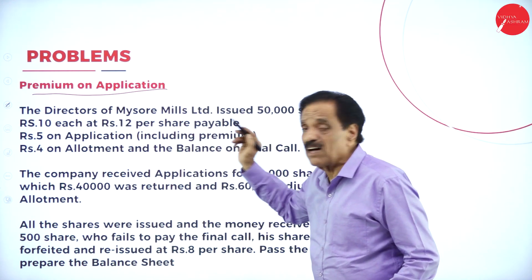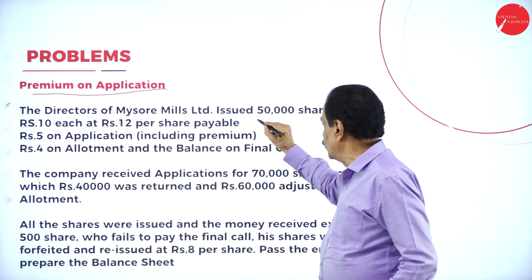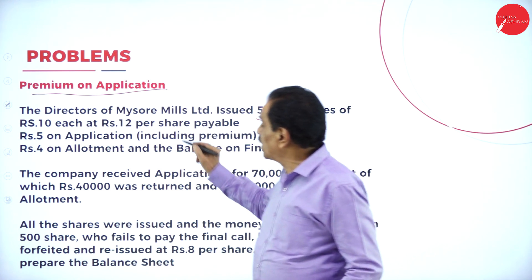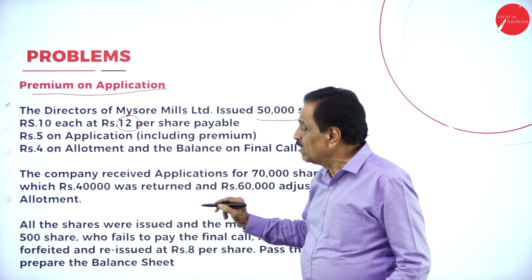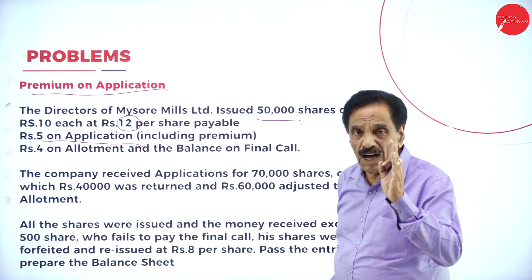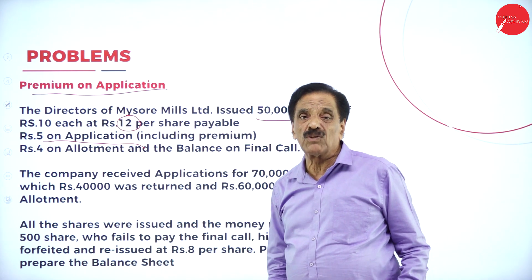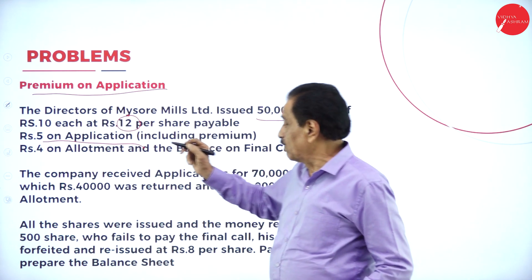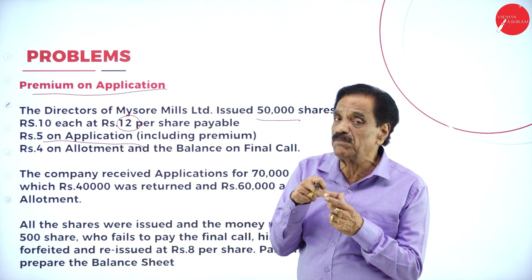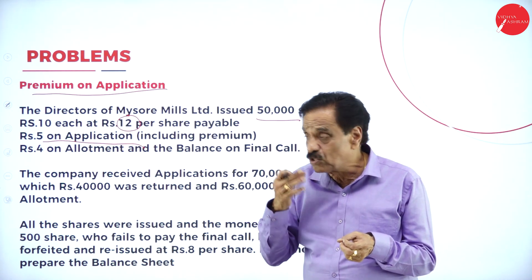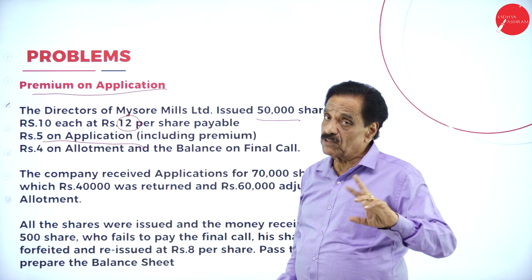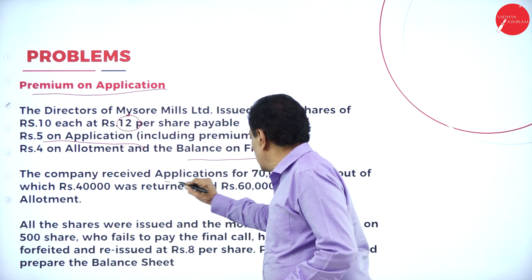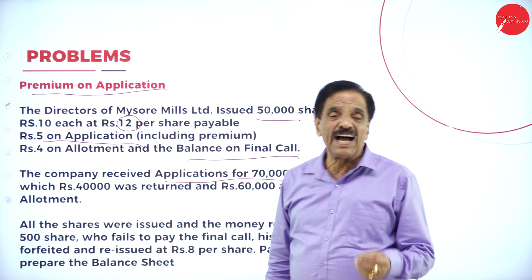The directors of Mysoor Mills Limited issued 50,000 shares of ₹10 each, at ₹12 per share. Payment is ₹5 on application including the premium of ₹2, so the real capital money is ₹3 and premium is ₹2. Then ₹4 on allotment, and the balance ₹3 on the final call.